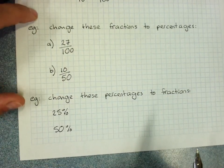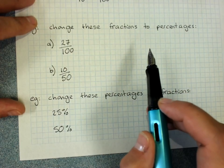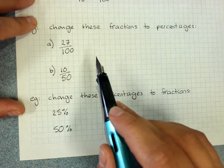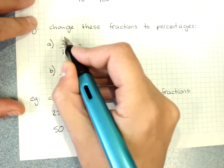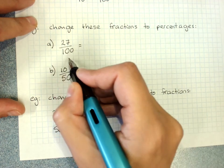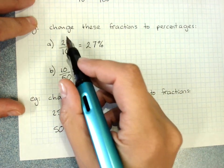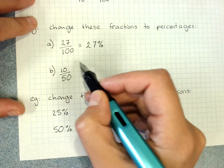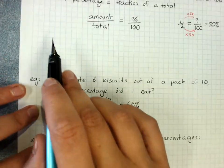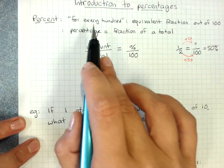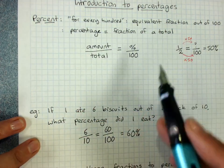Any percentage is just a fraction out of a hundred — that's sixty percent of the pack of biscuits, because every percentage is a percentage of a total, or a fraction of a total. So if we're asked to change fractions to percentages, we just need a fraction out of a hundred and that's a percentage. Twenty-seven out of a hundred is just twenty-seven percent, because it's out of a hundred — a percentage is for every hundred, or out of a hundred.